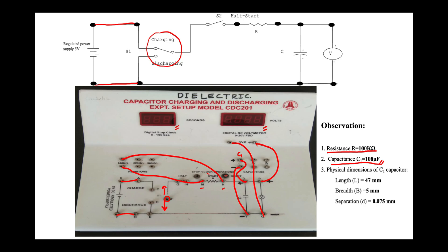Next we need to start the timer. If the toggle button is on the left side, the timer is halted; if we turn it to the right side, the timer starts. This button is used to reset the time. Start and reset the timer so it shows 0:00.0. Once we ensure there is no voltage in the capacitor, shift the toggle button upward so the circuit starts to charge the capacitor.